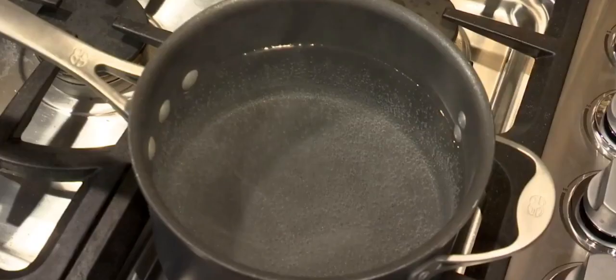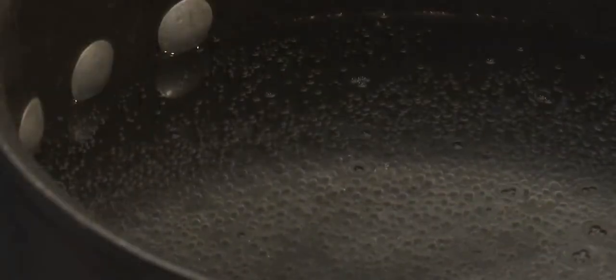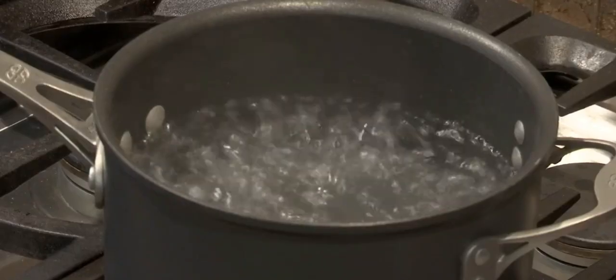As the temperature of the liquid increases, the liquid's volume also has to increase with the same factor, and this effect is known as displacement. One of the examples is the boiling of water. Dense molecules move at the bottom of the water, while the molecules which are less dense move upwards.